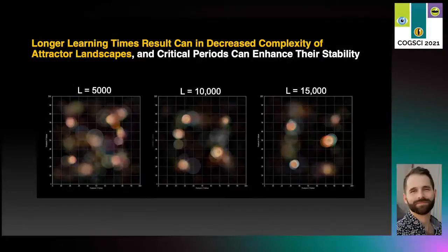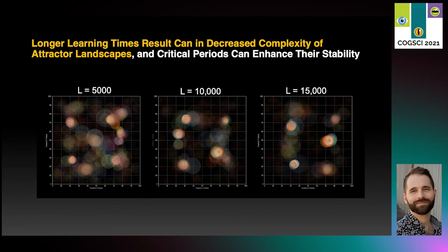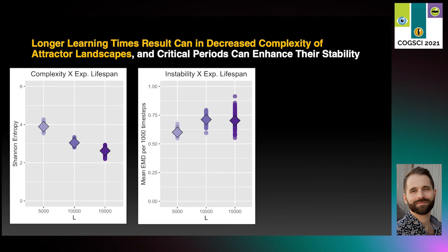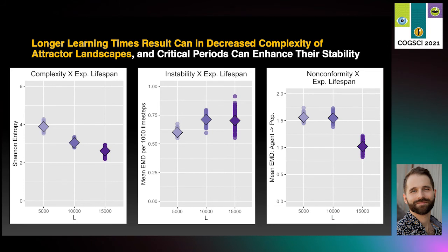Next, we found that longer learning times can result in decreased complexity of the attractor landscapes. Here we see the end state of the model for different expected lifespans. When lifespans are longer, moving to the right, individuals learn for a longer period of time. As you can see in the right panel, there seem to be fewer categories when learning times are long. This is due to cognitive competition between categories — over time, individuals fit the distribution with fewer categories, and when this keeps happening over generations, the population distribution simplifies. Longer learning times also make the population distribution only a little less stable, but they can help individuals become more closely aligned because there are fewer categories, which makes them easier to learn.